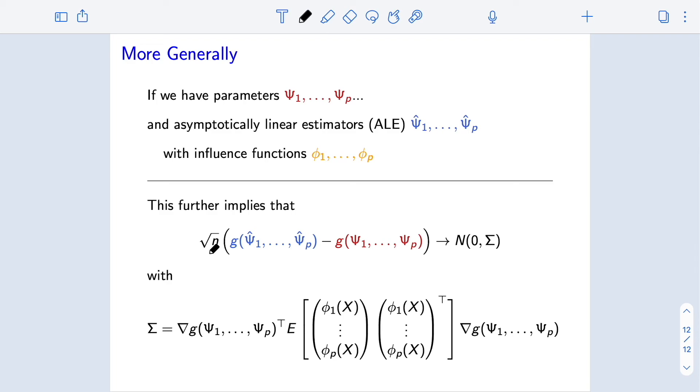And from here, we not only get that this estimator is consistent for this parameter, and in fact converges at a rate of at least 1 over square root of n. We also see if we scale this up by square root of n and look at estimator minus parameter, that that will converge to a normal distribution with mean zero and variance that we can calculate without too much trouble. So that variance has one piece that's the outer product of the influence functions, or the expectation of that outer product, and then a quadratic form involving the gradient of that differentiable transformation g.